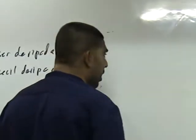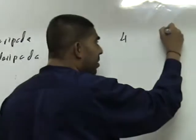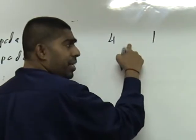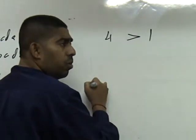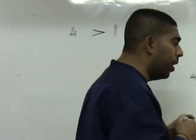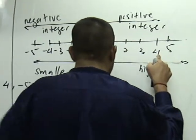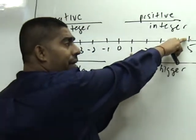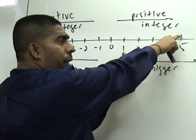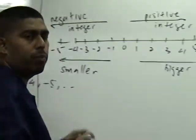Now, mari kita perhatikan di sana. Empat adalah lebih besar daripada satu atau lebih kecil daripada satu? Lebih besar. Four is greater than one. Kalau kita tengok di sini pada number line, empat ada di sini, satu ada di sini. Semakin ke kanan kita bergerak, nilainya semakin lebih besar. So four is greater than one. Are you clear now?